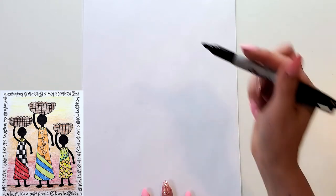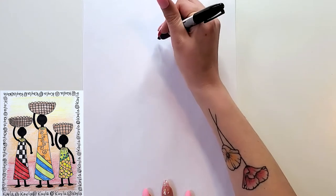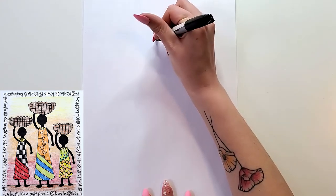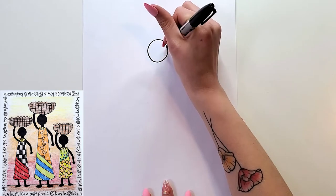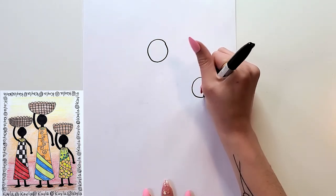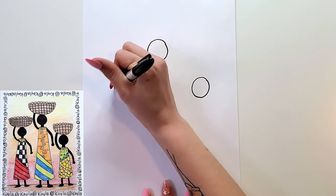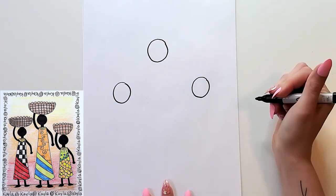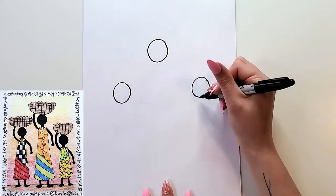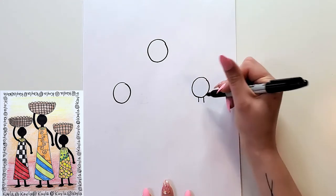Before we get to our line art and making our patterns we have to draw the shapes for our people. We're going to start with their heads and I like to make the one in the middle taller. I'm going to do a circle in the middle closer to the top and then one on each side that's lower. Then we're going to draw the necks — each person has a neck and it's just two lines.